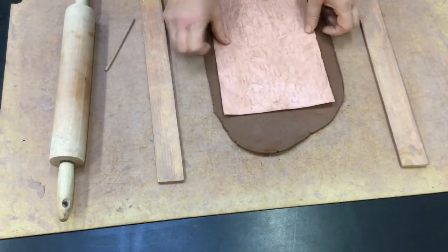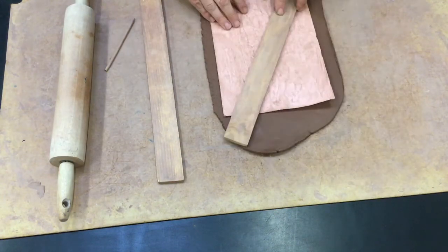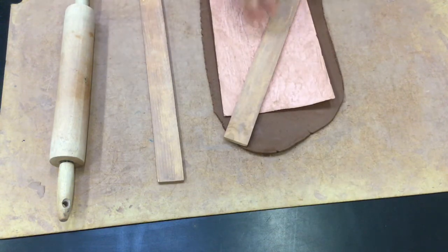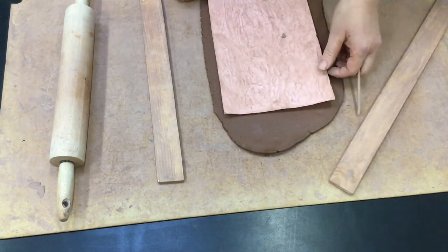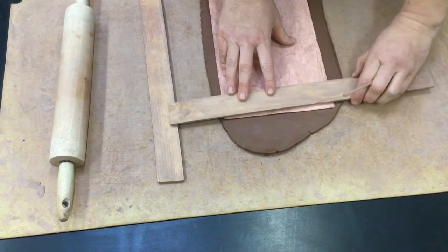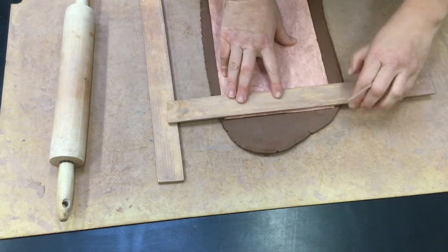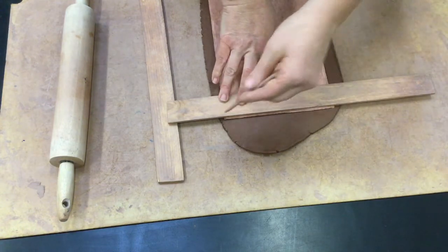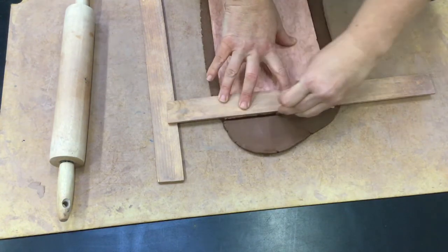Once this fits the next step is to cut out your rectangle. You want to use one of these slats to help you cut your clay so that you have a nice straight edge. When you cut the clay make sure that you are holding the wooden stylus straight up so that you get a straight cut.